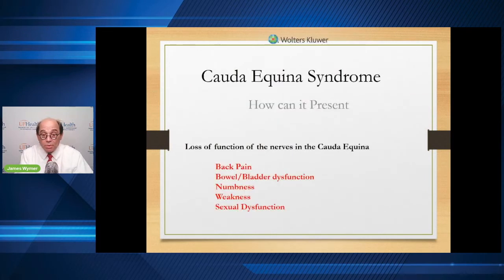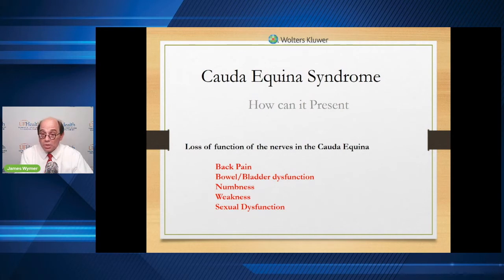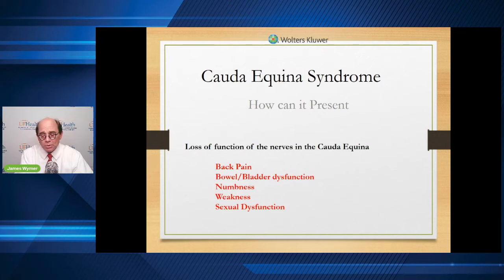Back pain, bowel and bladder dysfunction, numbness, weakness, sexual dysfunction — all things present with acute cauda equina — are just as much present with chronic cauda equina. These are symptoms we need to characterize more. The reason for setting up a registry is to really get a good understanding of the spectrum of how severe these symptoms are and how disabling each one is, rather than relying on retrospective acute data.